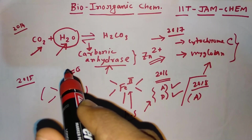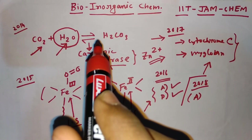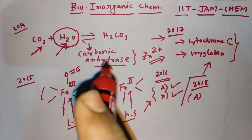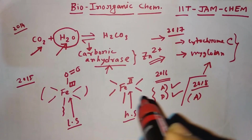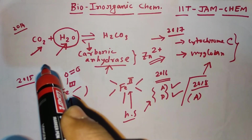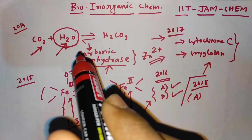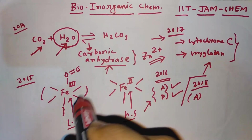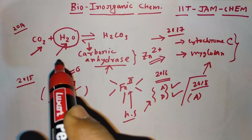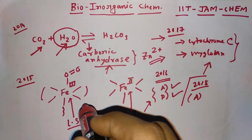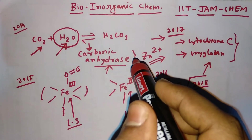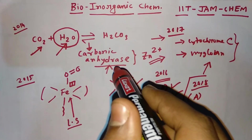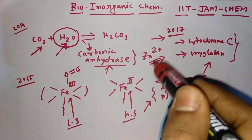In JAM 2018 one question came from carbonic anhydrase; in 2017 from hemoglobin and myoglobin; in 2016 from copper proteins; in 2015 from hemoglobin; and in 2014 from carbonic anhydrase. I notice an alternating pattern — in one year a question comes from hemoglobin or myoglobin, and the next year from carbonic anhydrase or different metal ions. Based on this pattern, in JAM 2019 the question may come from hemoglobin or myoglobin, since 2018 had carbonic anhydrase. This is just a guess and may not be correct.